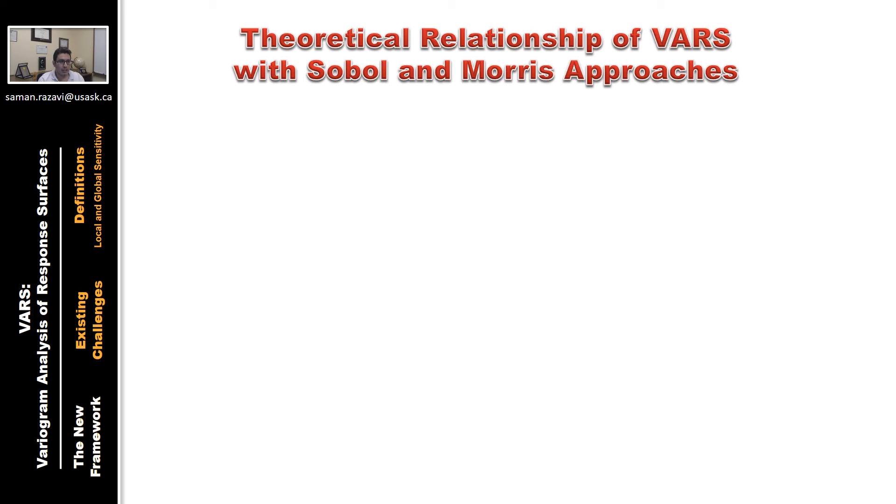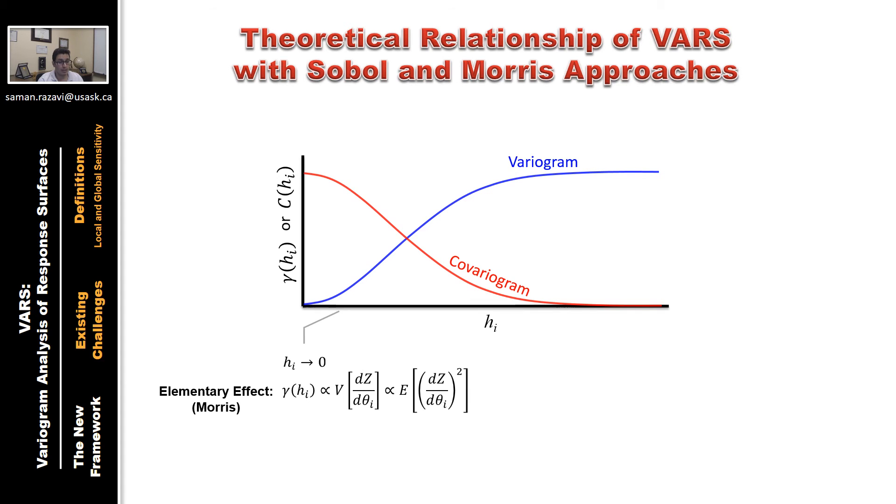A little bit more on that. There are clear theoretical relationships between VARS and Sobol or variance-based and Morris derivative-based approaches. These are typical directional variogram and covariogram functions. On the x-axis, you see h, which is the distance between points or scale or perturbation scale. The vertical axis is variogram or covariogram value, with a unit equivalent to variance. For small h values, gamma approaches the derivative-based sensitivity metrics, such as what Morris tells you. Elementary effects.